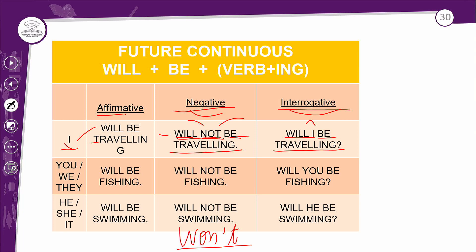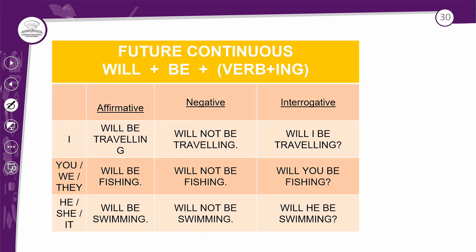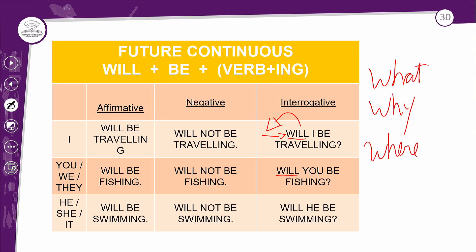Na interrogativa, o verbo 'will' vai para frente, logo em seguida o sujeito, e logo em seguida o restante da frase. Esse tipo de pergunta é yes/no question — você pode responder com sim ou não. Você também tem a opção de fazer perguntas com pronomes interrogativos — 'what', 'why', 'where', 'when' — que vão exigir respostas mais elaboradas. Eles vêm antes do verbo 'will'. Então é isso — negativas e interrogativas mostradas para você.